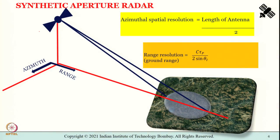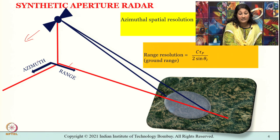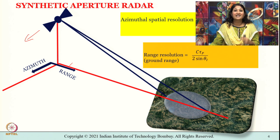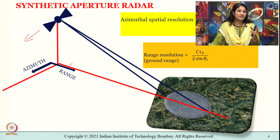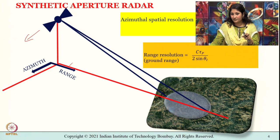Let me reiterate: in synthetic aperture radar, chirped pulses are used in the range direction, and the motion of the platform induces frequency modulation in the azimuth direction. The net effect is that in both directions — azimuth as well as range — the signals are getting frequency modulated, and it is this frequency modulation which is sensed in the Doppler shift.